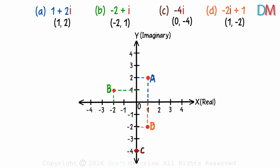I am sure you are comfortable with plotting complex numbers now. But wait, did you observe something? 1 minus 2i is the complex conjugate of 1 plus 2i.